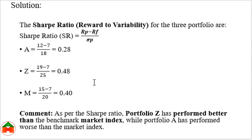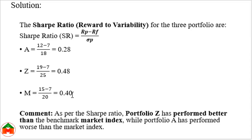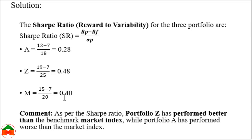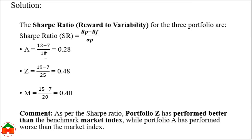When evaluating performance, we compare the portfolio ratio with the market performance. The market ratio is 0.40. Comparing Portfolio Z's ratio of 0.48, it is higher than the market — so Portfolio Z is performing well. For Portfolio A, the ratio is 0.28, which is lower than the market ratio of 0.40, so Portfolio A is performing poorly compared to the market.